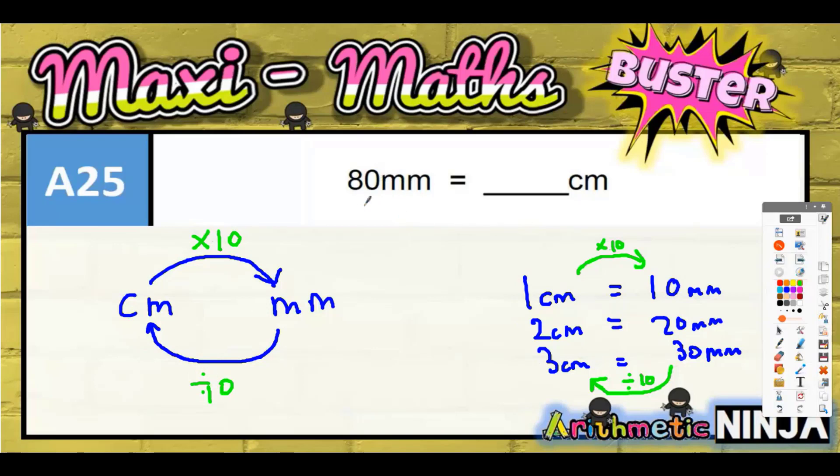And now you can use that on this question here. So 80 millimeters - the 80 goes on this side and we are going backwards into centimeters, so we've got to basically do 80 divided by 10. And 80 divided by 10 is 8, so the final answer is that 80 millimeters is 8 centimeters.